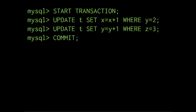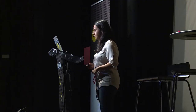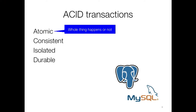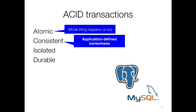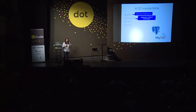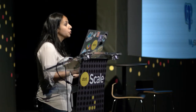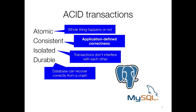A transaction is something you issue to your database, and what's going to happen is that it's going to execute the things between start and commit atomically — it's going to do all of those SQL statements together at the same time. ACID stands for: Atomic, which means the whole thing happens or it doesn't happen; Consistent, which in this case is an application-defined notion of correctness — that's what the C in ACID means. So as an example, if you're a banking application and you've decided that account balances shouldn't go negative, then that's what consistent means. There's Isolation, which means that transactions don't interfere with each other. And Durability, which means the database can recover correctly from a crash.